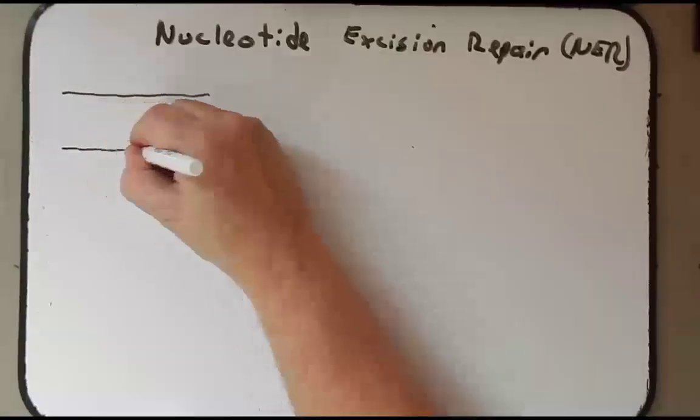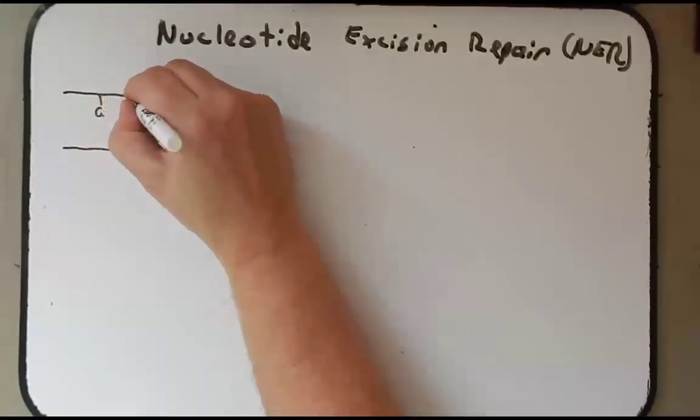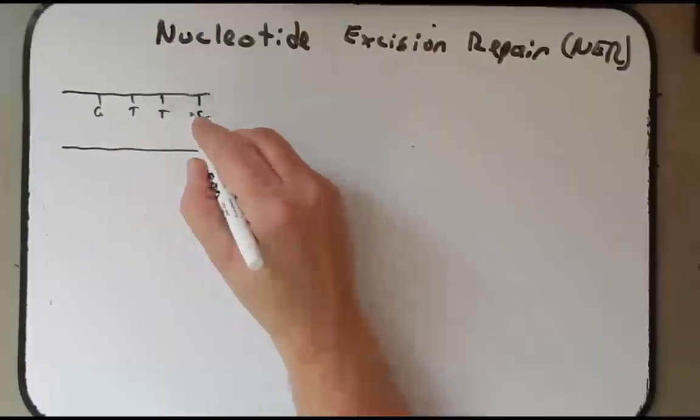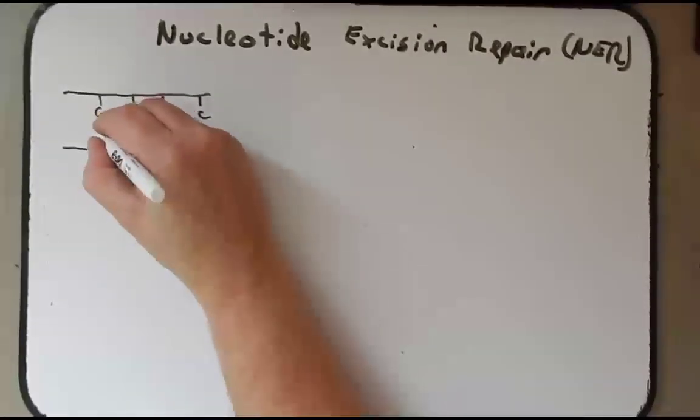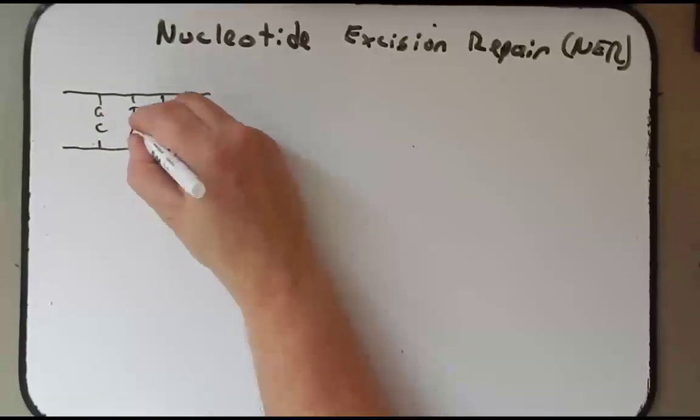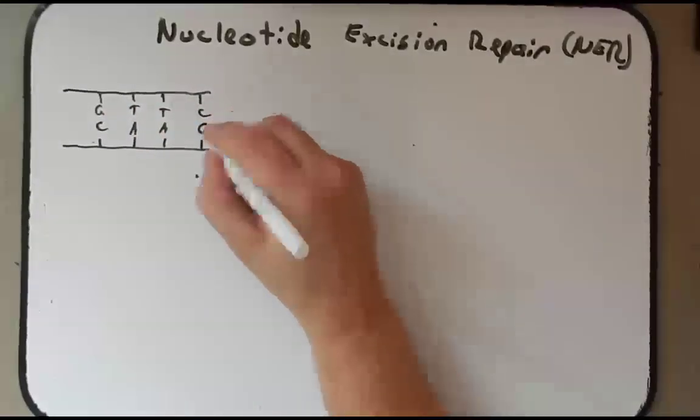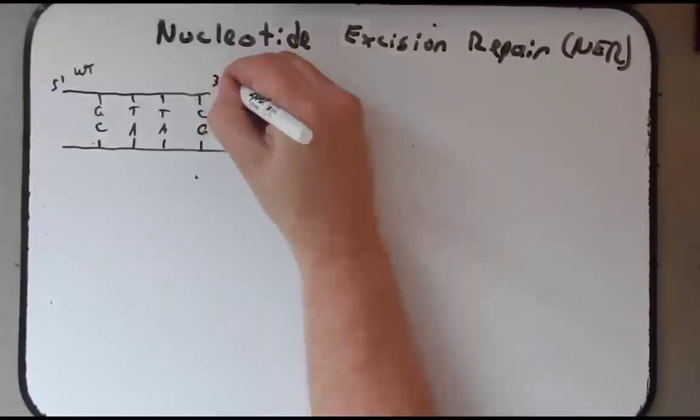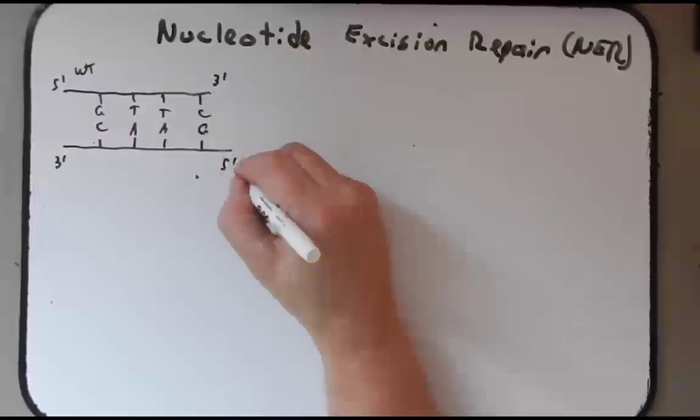So remember we're going to start off with our DNA. I'm going to draw a couple bases here: G, T, T, and C. So guanine, thymine, thymine, cytosine. And then we're going to draw the complementary bases here: C for cytosine, A for adenine, A for adenine, and G for guanine. So this is the way it should look, the way it normally looks, the wild type version. We can even give it our good friends here, 5' and 3' polarities.